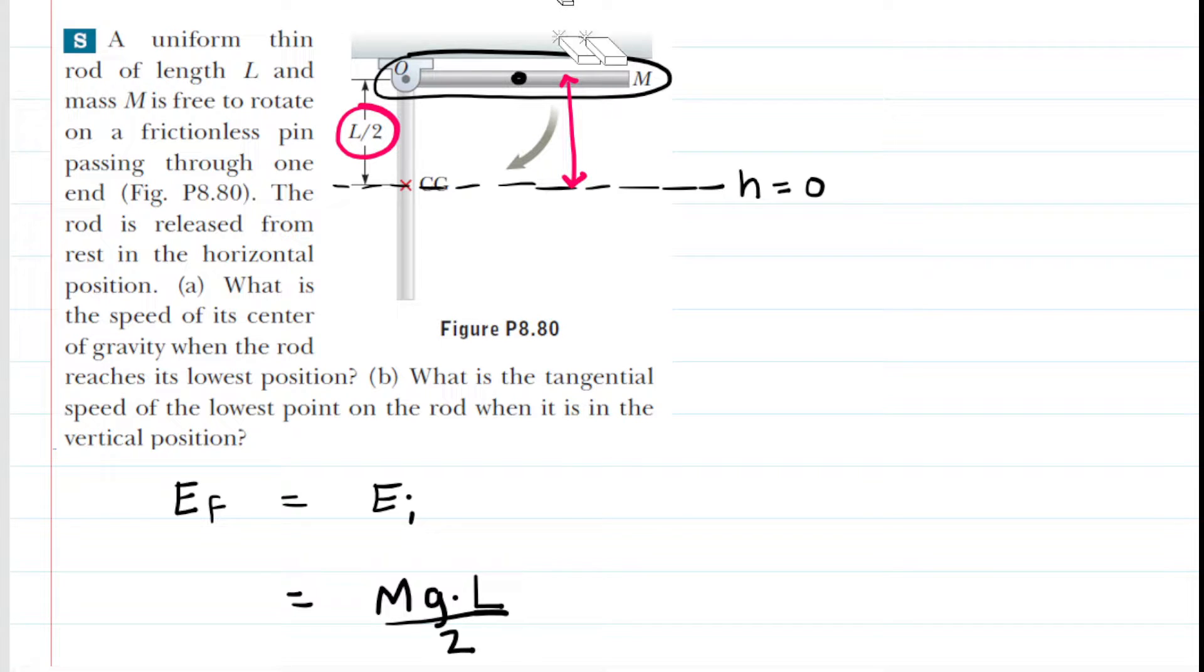And then the rod is released from rest. So there's no kinetic energy. And it swings down to that lower position. And now it's moving. So now the rod is going to have kinetic energy. And in particular, it's going to have rotational kinetic energy because the rod is pivoted to this point O here.